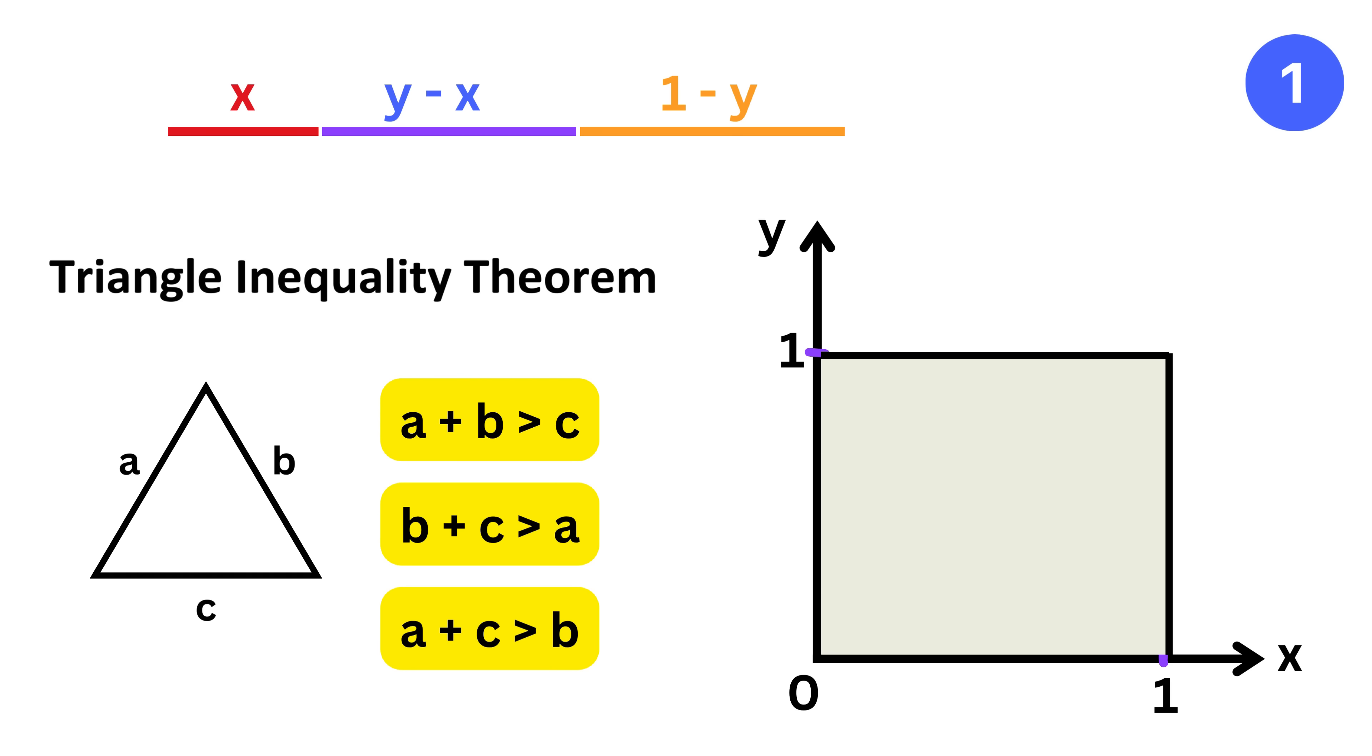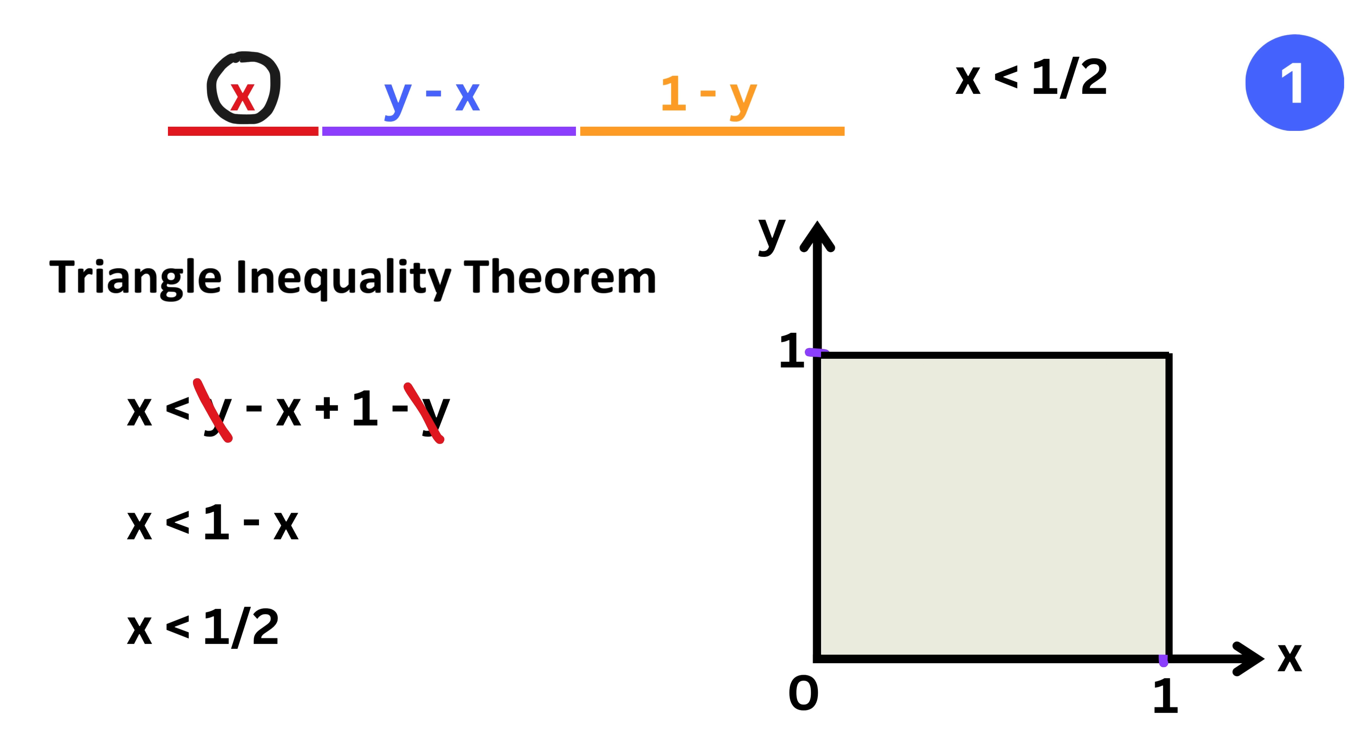So we have these three inequalities. First, we have x is less than (y minus x) plus (one minus y). The y cancels out and this simplifies to x is less than one minus x, and so x must be less than one half.